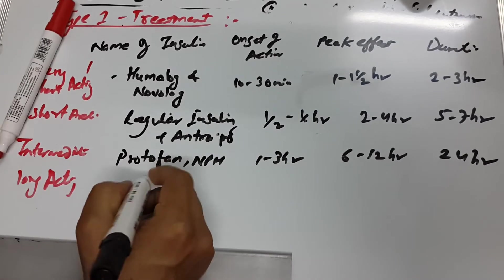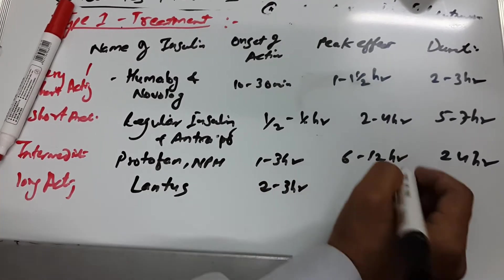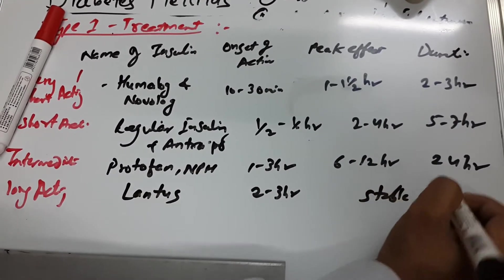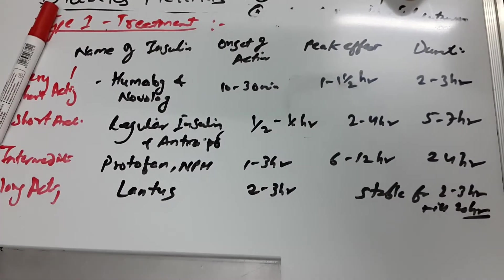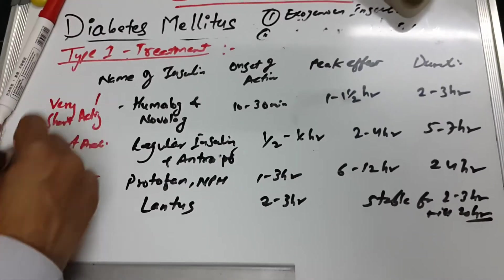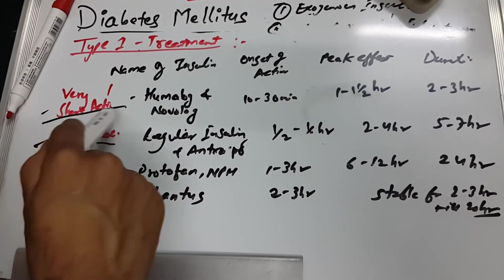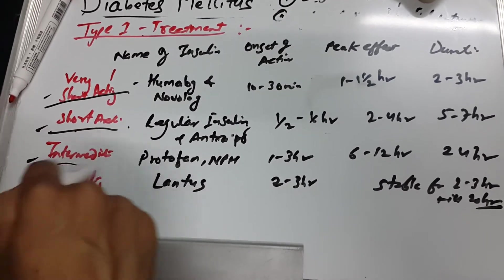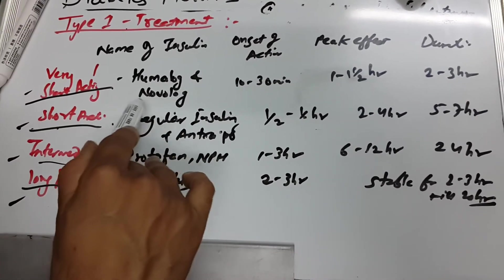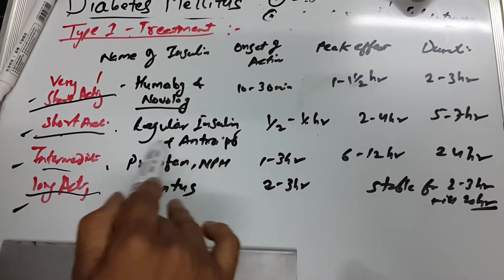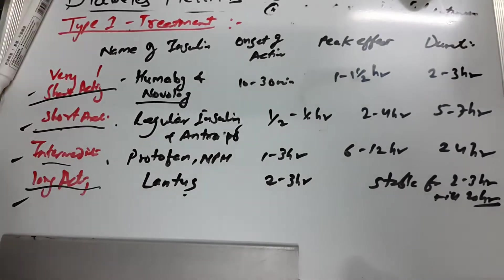The long-acting insulin is Lantus. Its onset is two to three hours, and it remains stable for up to twenty hours. To summarize the four categories: very short-acting is Humalog and Novolog; short-acting is regular insulin and Humulin R; intermediate-acting is Protophane and NPH; and long-acting is Lantus.